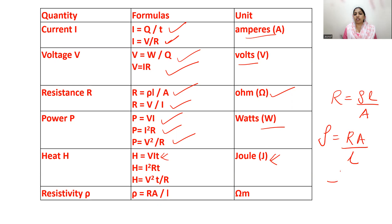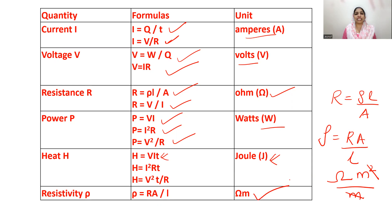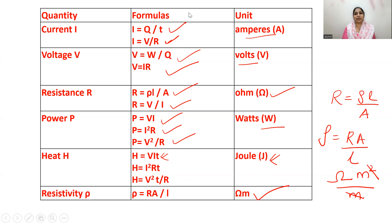The unit of resistance is Ohm, area is metre squared, and length is metre. So the unit of resistivity is Ohm metre. Thank you for watching. Have a wonderful day ahead, take care.